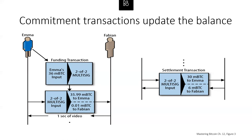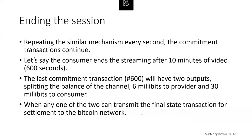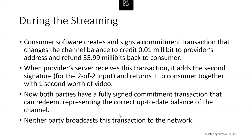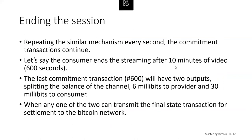In each additional round, the software creates and signs another commitment transaction consuming the same 2-of-2 output from the original transaction, allocating additional millibits for the additional video. Fabian's software signs and returns the next commitment transaction along with additional video. Once finished, either party can transmit the final state transaction for settlement to the Bitcoin network. In the entire lifetime of the channel, only two transactions need to be submitted for mining: the funding transaction that established the channel and the settlement transaction that allocated the final balance correctly between the two participants.